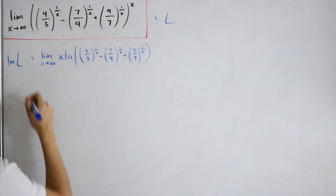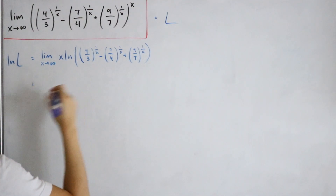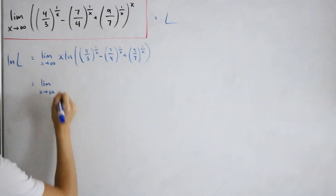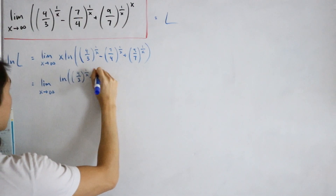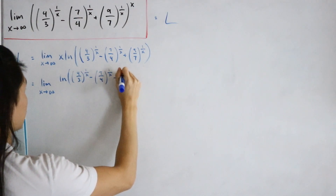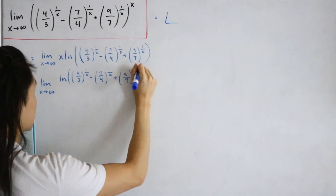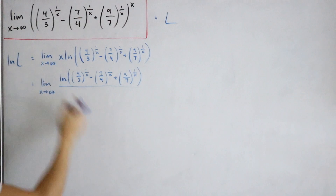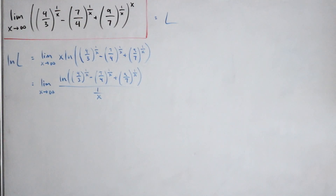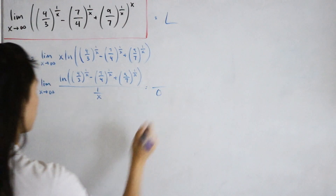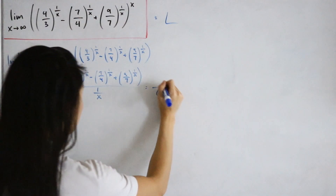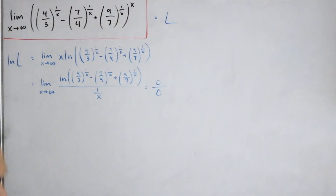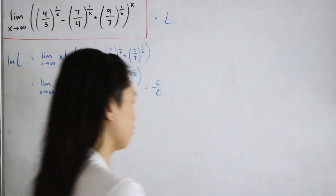Taking this limit as written still gives an indeterminate form, so we convert it to a rational function. We place the natural log expression in the numerator and move x to the denominator as 1/x. Now if we take the limit, the denominator approaches 0, and the numerator gives ln(1) = 0, so we have the 0/0 indeterminate form.